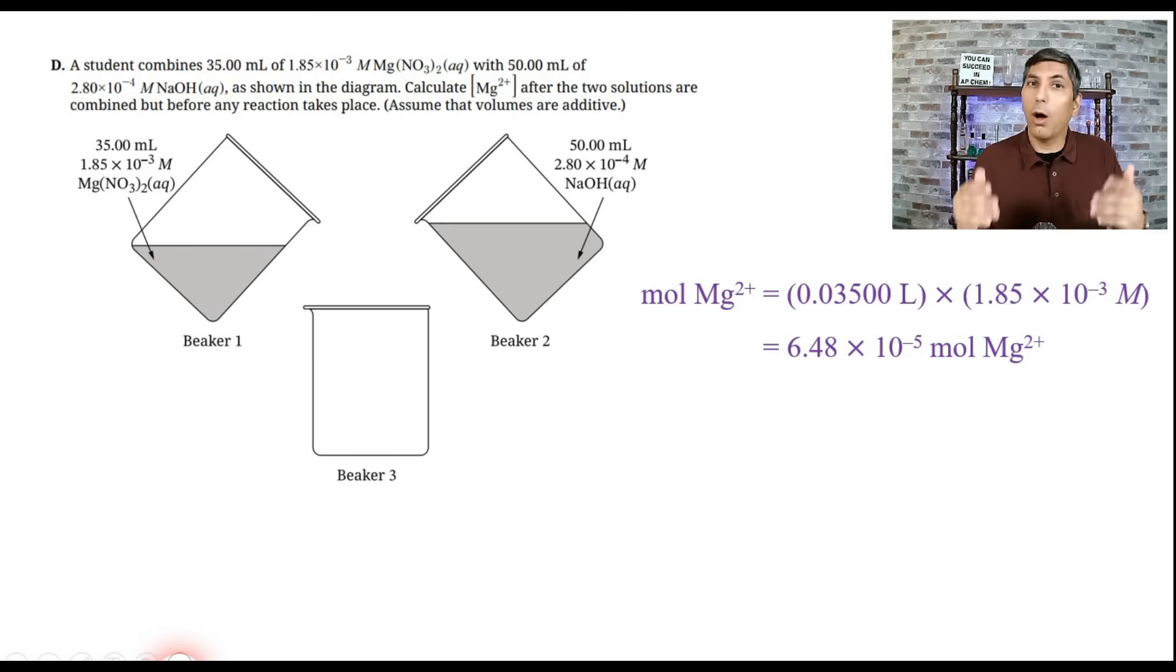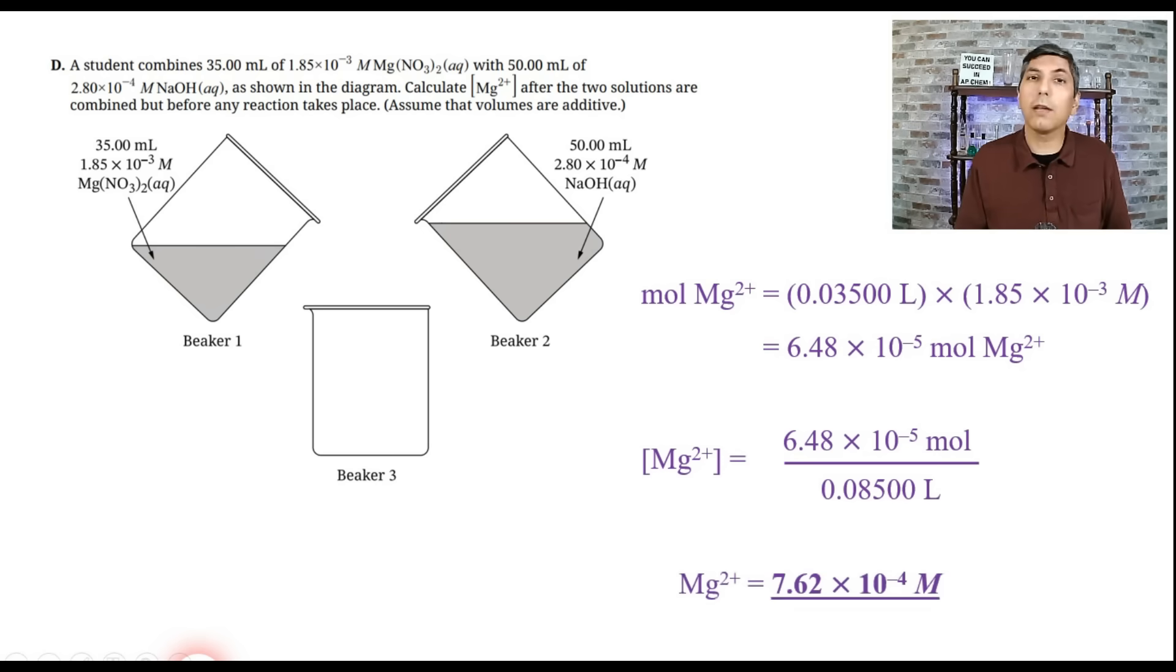So we have that part of this. Now we have to determine the volume, the total volume, after you mix the two beakers. So we have 35 milliliters plus 50 milliliters. That's 85 milliliters or 0.08500 liters. So to find the molarity, we have to take the moles of magnesium that we just calculated and divide that by 0.08500 liters. When you do that, you find that the molarity of the magnesium ion here is about 7.62 times 10 to the negative fourth moles per liter. So if you said that, give yourself a point for part D.